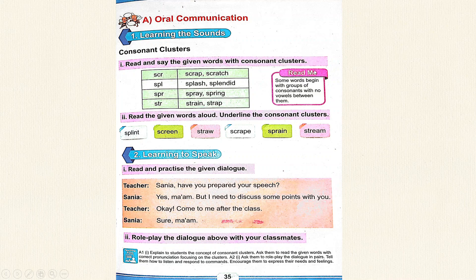Read me: Some words begin with groups of consonants with no vowels between them. Read and give the words aloud, and underline the consonant clusters. Splend, Screen, Straw, Scrape, Spring.